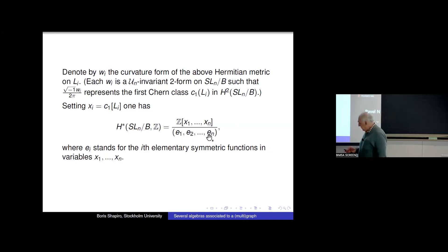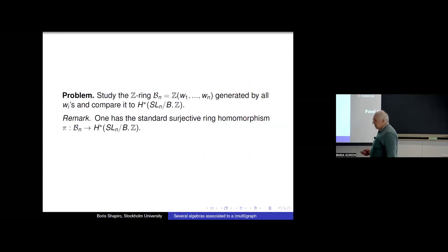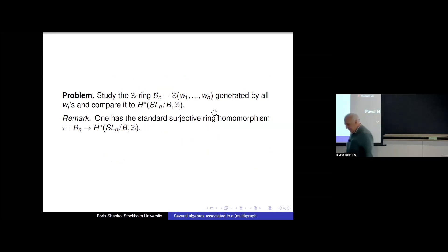These curvature forms are UN-invariant two-forms on the space of complete flags, and their normalized Chern classes generate the cohomology. The cohomology ring of the space of complete flags is the quotient of the polynomial ring generated by x₁ through xₙ modulo the ideal generated by elementary symmetric functions. This is very well known and is the basis of the representation theory of the symmetric group in many ways.